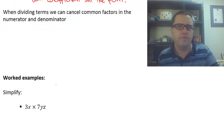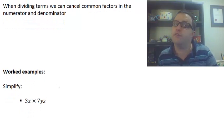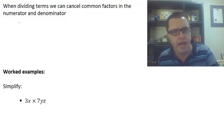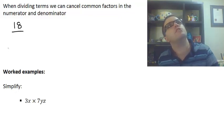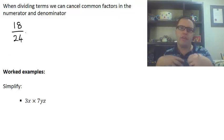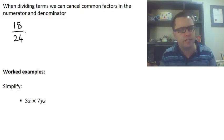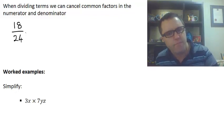Now, when dividing terms, we can cancel common factors in the numerator and denominator. I'm going to show you how that happened in our fractions first. So remember if we had, let's say for instance, 18 over 24.